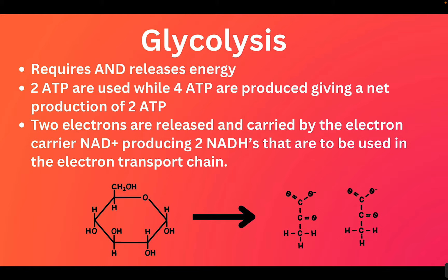Electron carriers are in charge of carrying and transporting these electrons. In glycolysis, the electron carrier NAD+ is going to pick up two electrons and become NADH, and this happens twice. So we have two NADHs as a result of glycolysis. These NADHs are then going to be used to take the electrons to our third stage, the electron transport chain. So the stage of glycolysis gives us: two pyruvates, two NADHs, and two ATPs — the number two is very important in glycolysis.